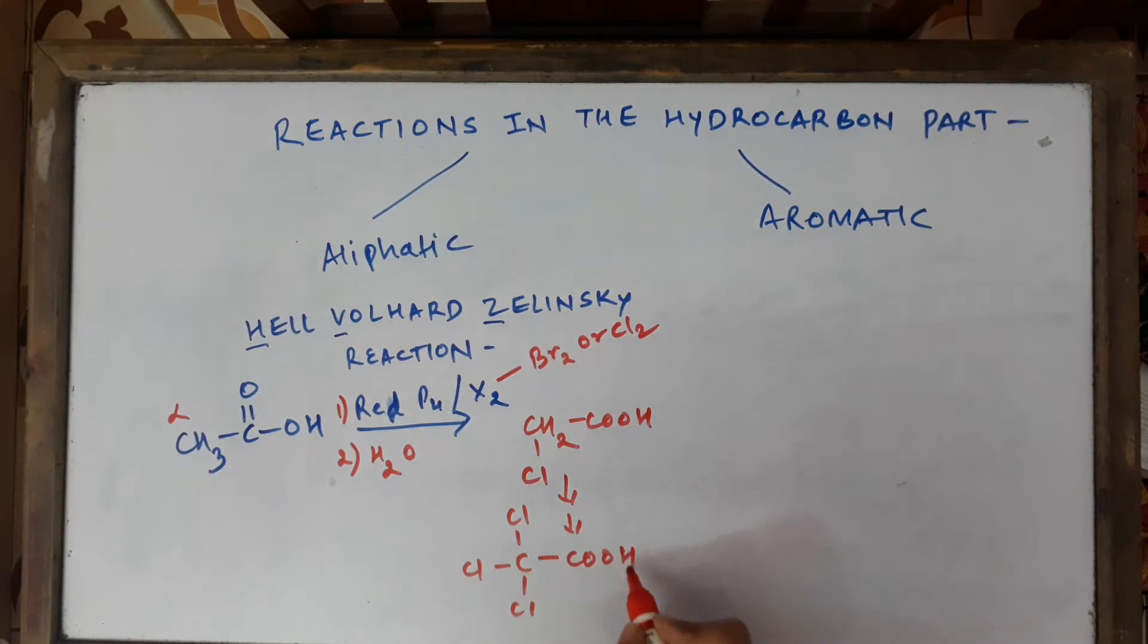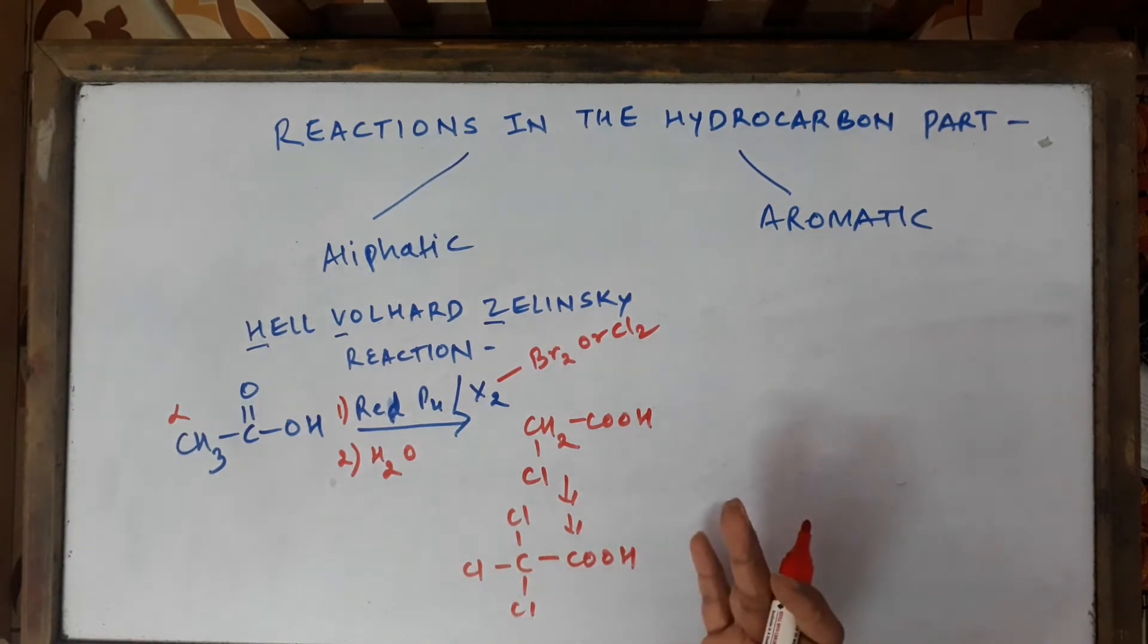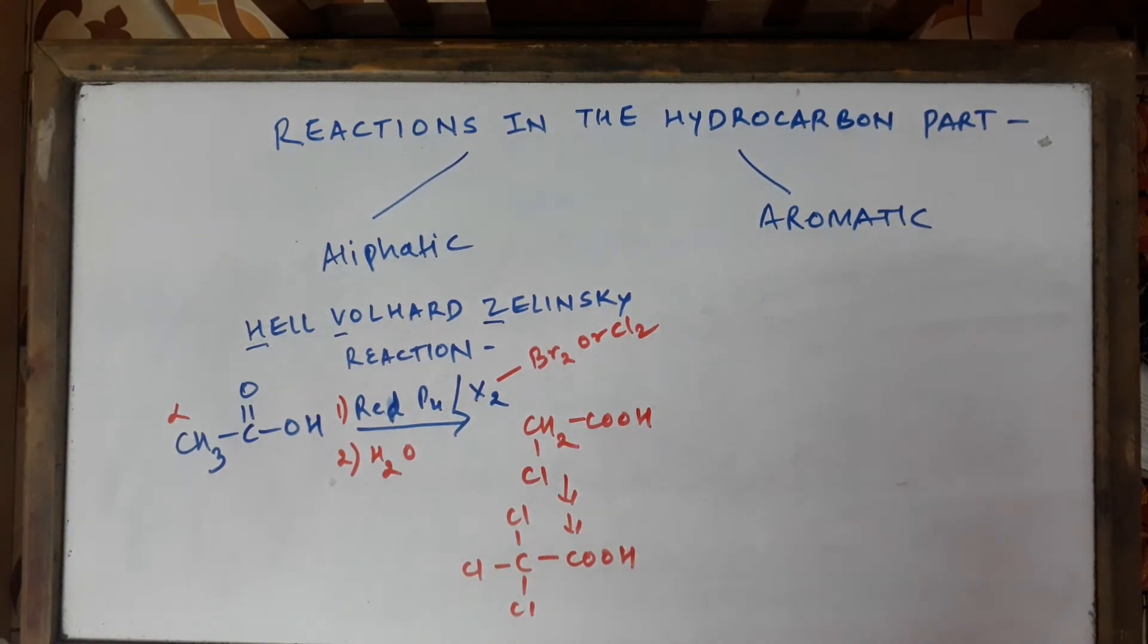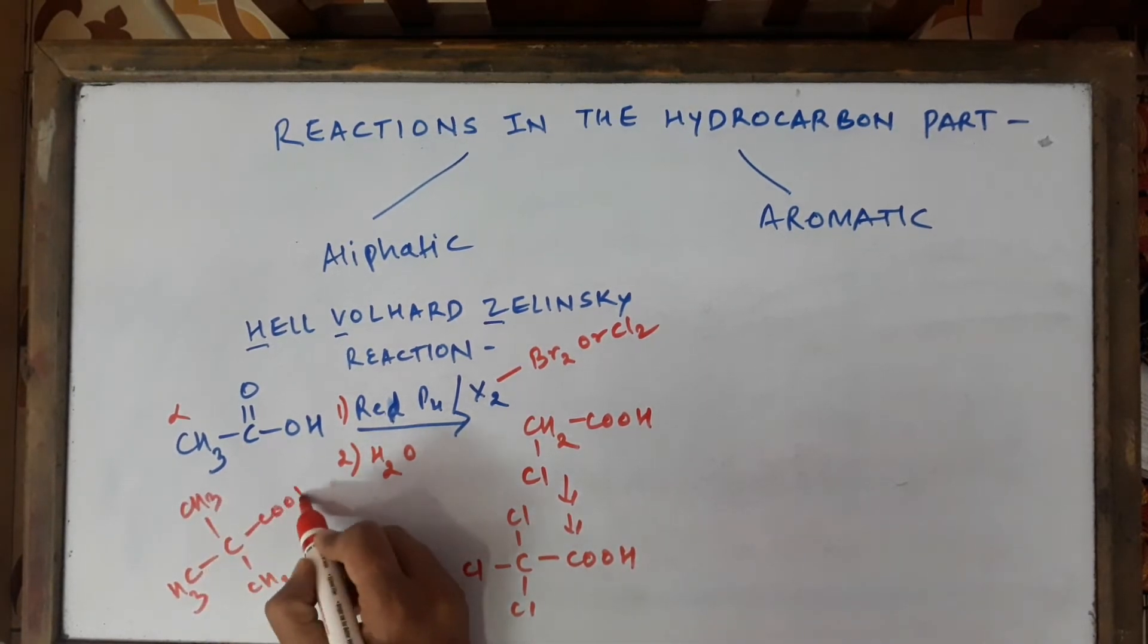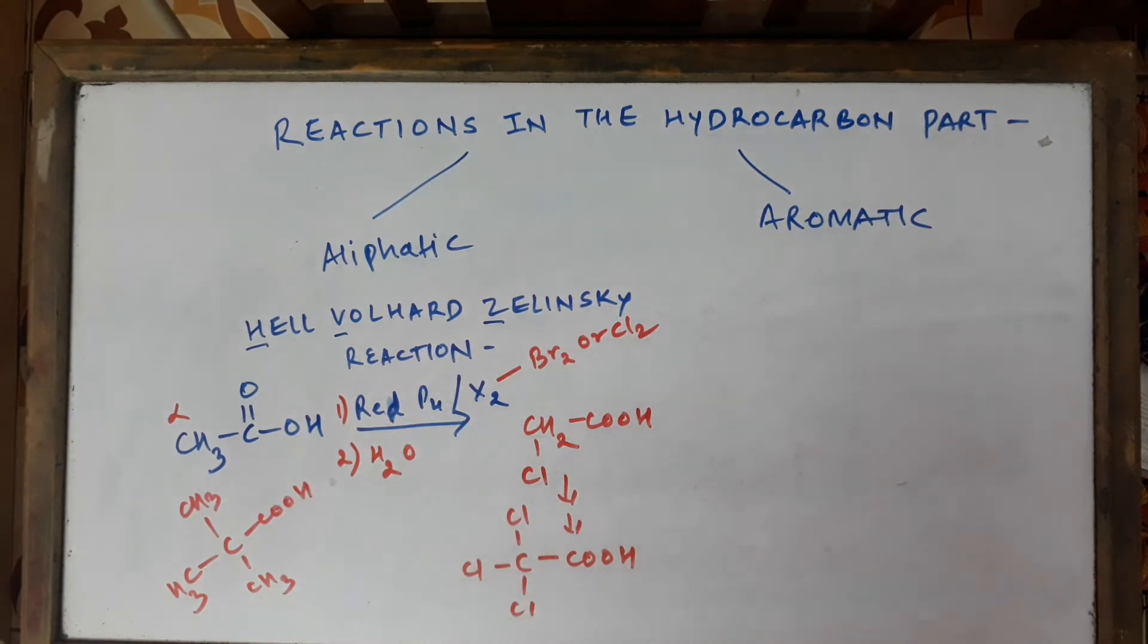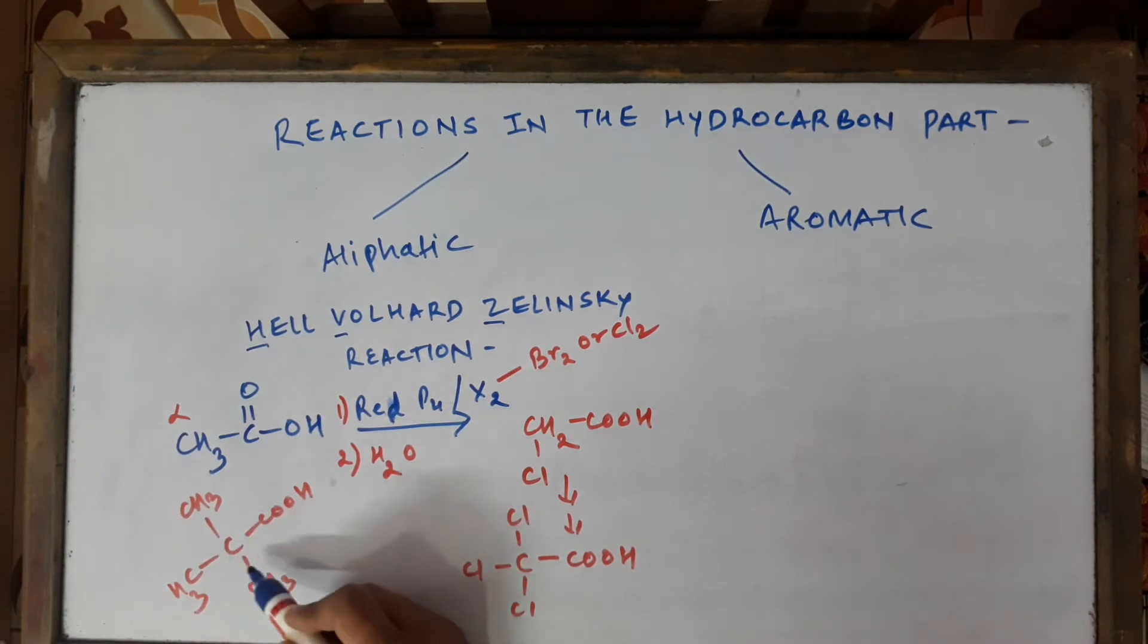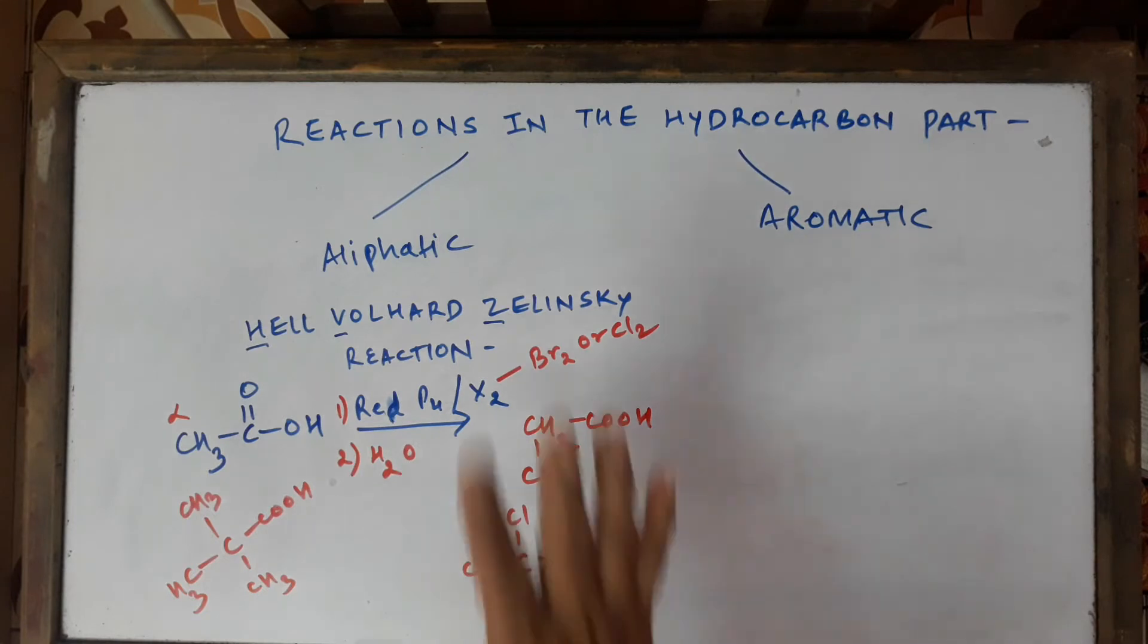This is a simple one mark question asked in the exam. It's alpha halogenation of carboxylic acids. Questions like this can be asked: can you carry out the HVZ reaction of an acid like this? No, I cannot carry out because it lacks the alpha hydrogen atoms. You can see that this alpha carbon atom does not have any hydrogen atom, so this is not possible.